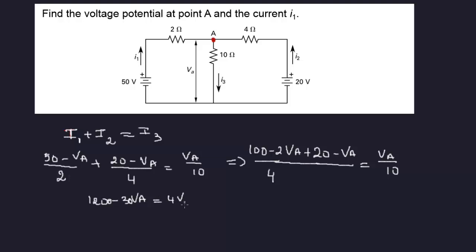So 4VA. So this is VA is equal to 1200 over 26. No, no, no. 1200 over 34, rather. That's what happens when you're trying to do things mentally. 1200 over 34, yes. 35.29. Almost 35.3. So VA is equal to 35.3 volt.